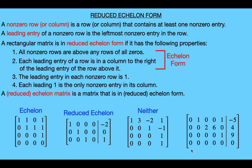For our last example, we have a row of all zeros at the bottom, so the first property is satisfied. The leading entries are a one, a two, and a one, where each is in a column to the right of the leading entry of the row above it, so the second property is satisfied and this matrix is in echelon form. However, the third property is not satisfied because the two is a leading entry but not equal to one. The fourth property is also not satisfied because the leading one in the third row is not the only non-zero entry in its column. So this matrix is in echelon form but not in reduced echelon form.